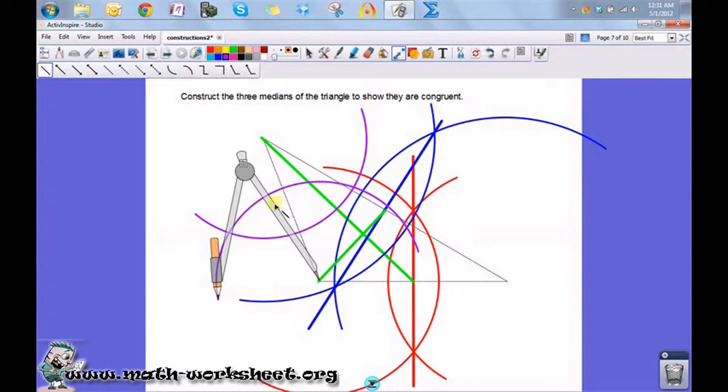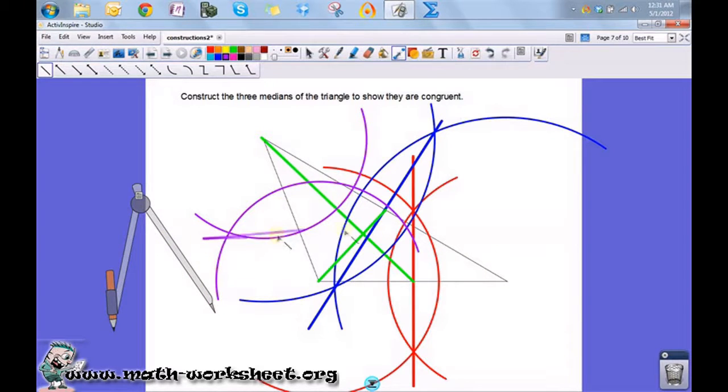Now, where those two intersect, draw a line through those two intersection points. That crosses this side at the midpoint. So, let's draw a green line to represent the median.